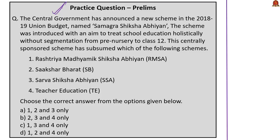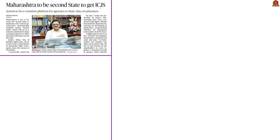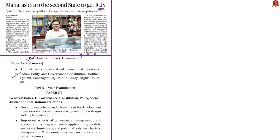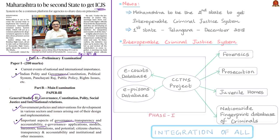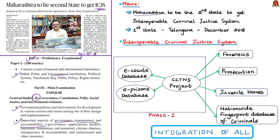Moving on to the next article, which is about the Interoperable Criminal Justice System. This article has appeared on page 5 of the Bengaluru edition only. It will be helpful in prelims under current events of national importance and Indian polity and governance, and in mains under GS Paper 2 — government policies and interventions for development in various sectors and issues arising out of design and implementation. Maharashtra is set to become the second state to implement the central government's Interoperable Criminal Justice System, or ICJS.